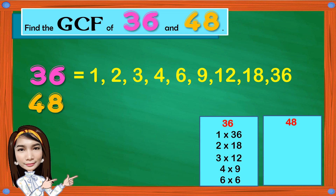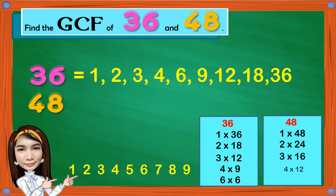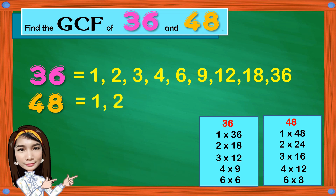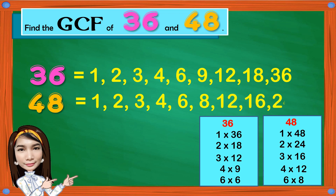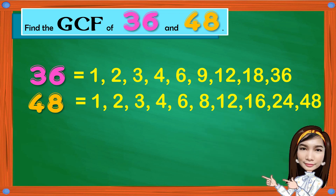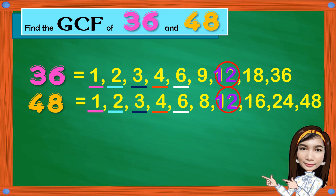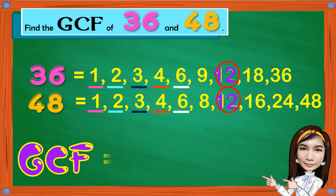Next, we have 48. Using the counting numbers 1 to 9, we have 1 times 48, 2 times 24 is 48, 3 times 16 is 48, 4 times 12 is 48, and 48 is not divisible by 5. So the factors of 48 are 1, 2, 3, 4, 6, 8, 12, 16, 24, and 48. Next, underline the common factors: 1, 2, 3, 4, 6, and 12. So the greatest common factor of 36 and 48 is 12.